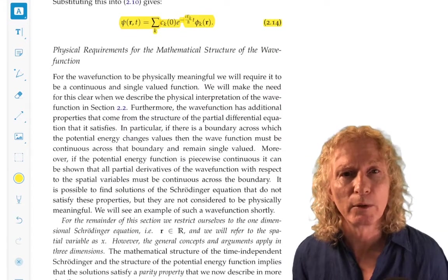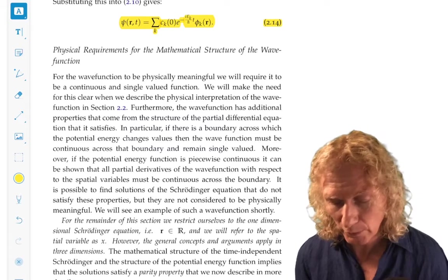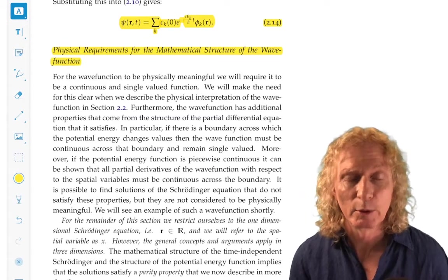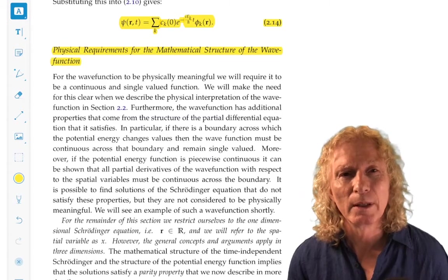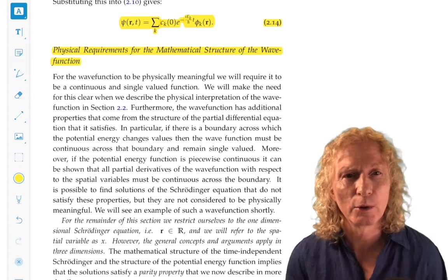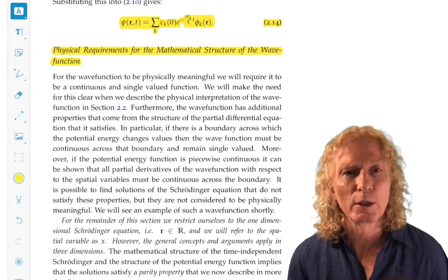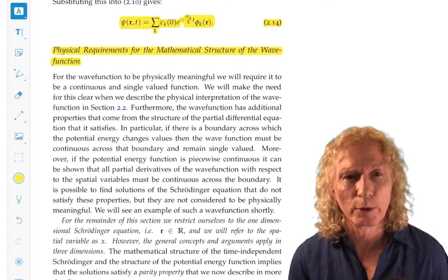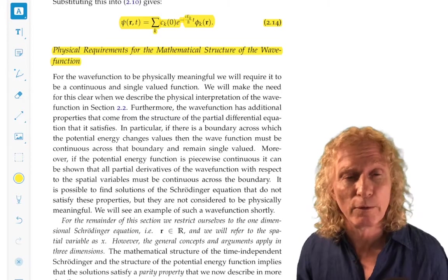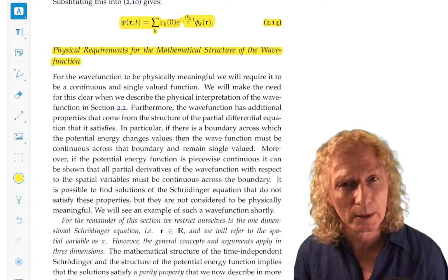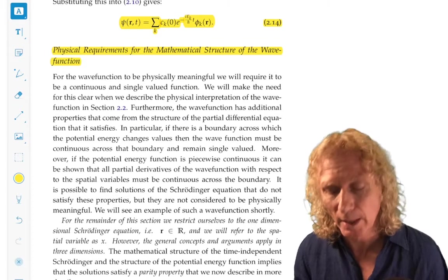Now, there are certain physical requirements that we're going to demand for a solution of the Schrödinger equation to be physical. We're going to want the function to be continuous, single-valued. There will be some conditions imposed on it just by the structure of the partial differential equation. If the potential energy varies in space, we're going to want the partial derivatives to vary continuously across boundaries between different values.